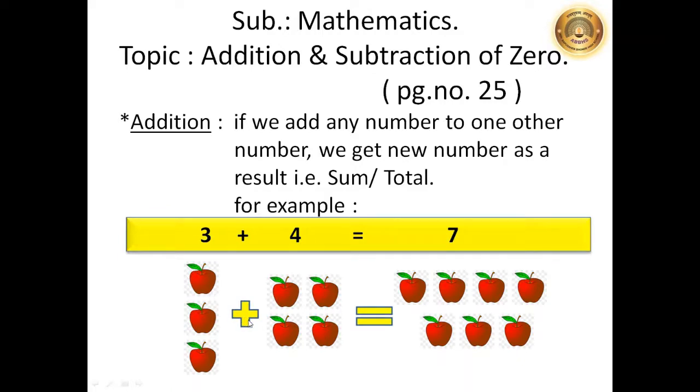This is the sign of addition. That is, plus. We are adding 3 apples plus 4 apples. In result, we have total 7 apples. Let's count.